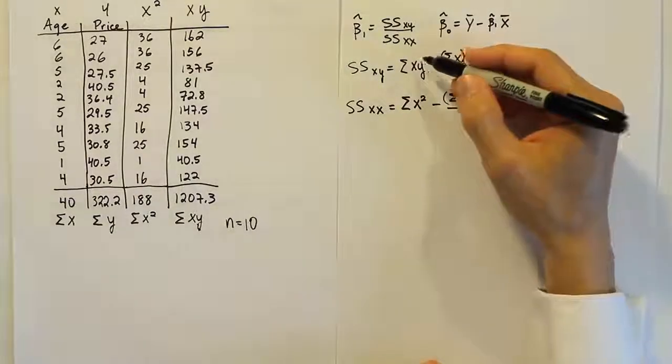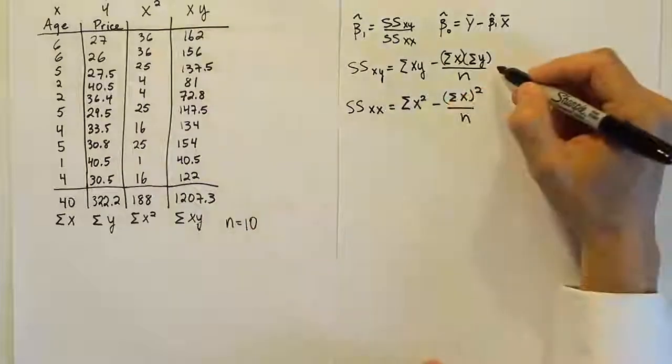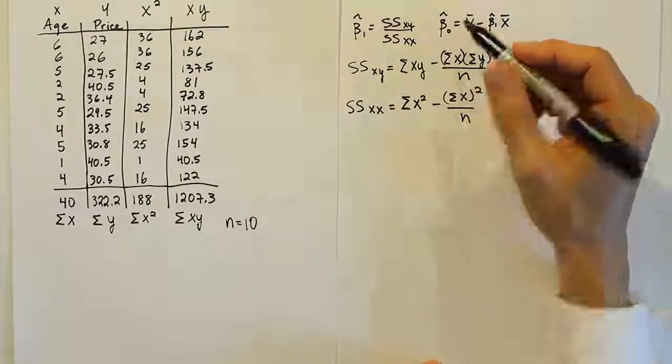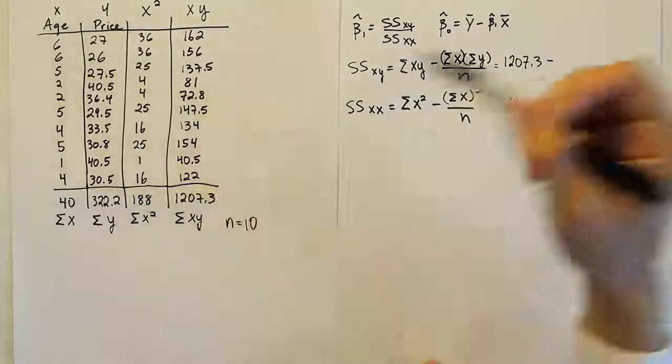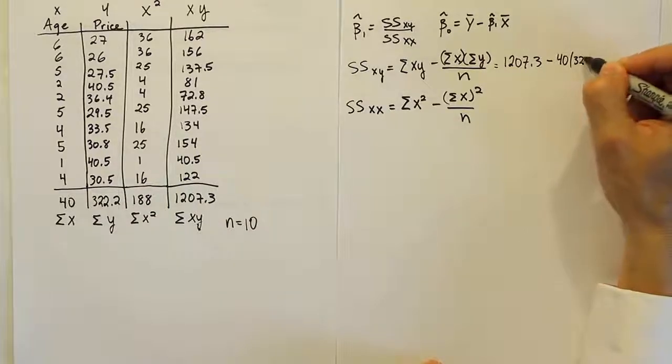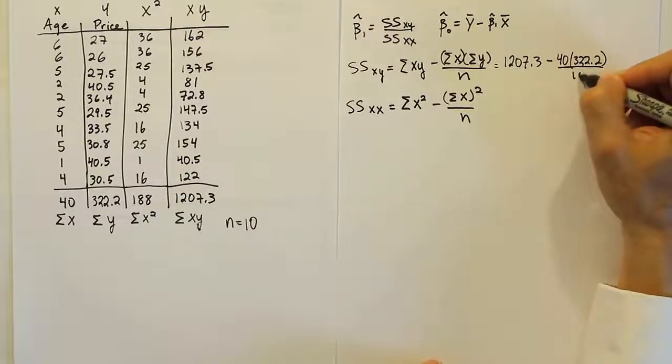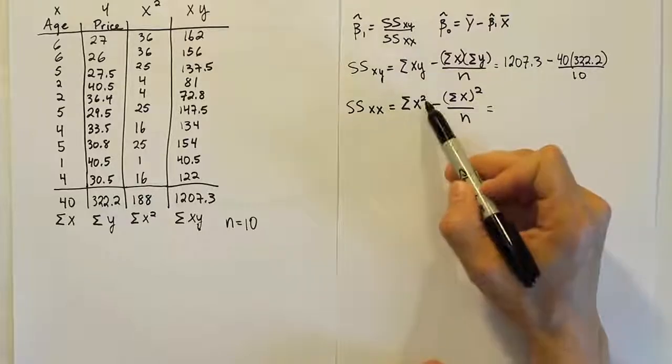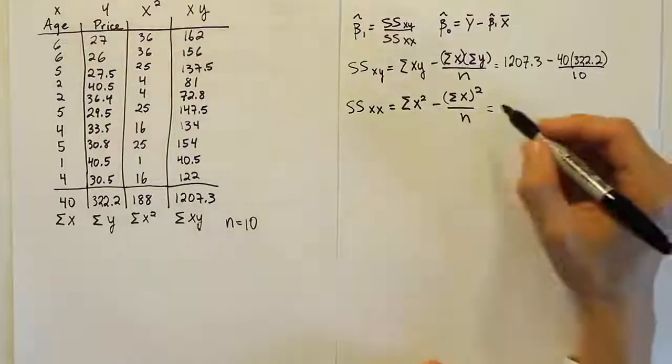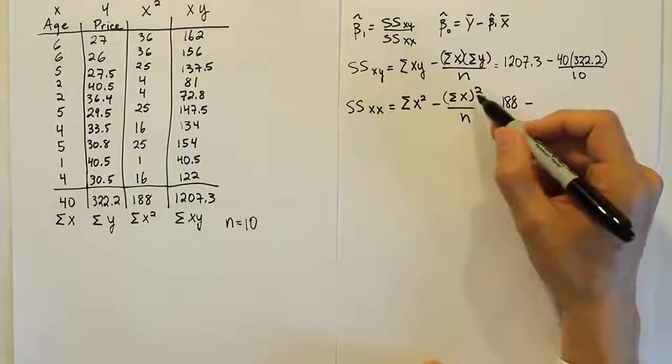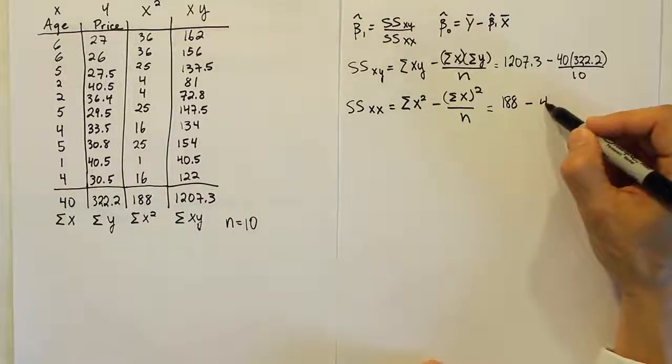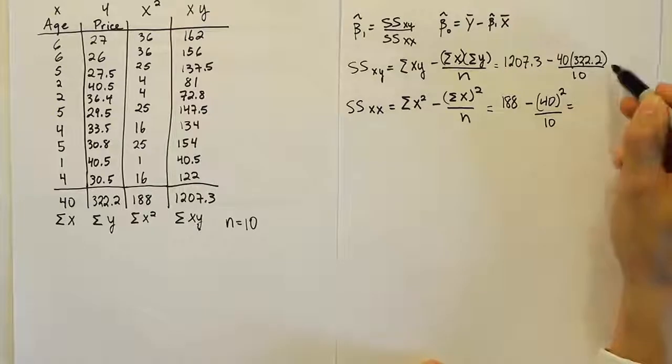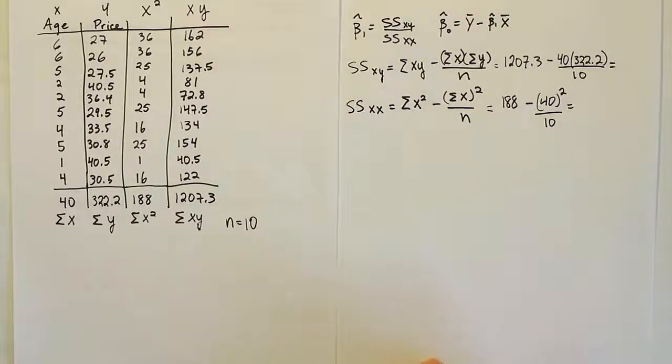When you look at the first one, it's the sum of xy. The sum of xy is 1,207.3 minus the sum of x times the sum of y, that's 40 times 322.2, all over 10, which is our sample size. We're going to work that out in a minute with a calculator. Let's fill in this one next. The sum of x squared, the sum of x squared is 188 minus the sum of x quantity squared, so that would be 40 squared, and then divide by n, which is 10.